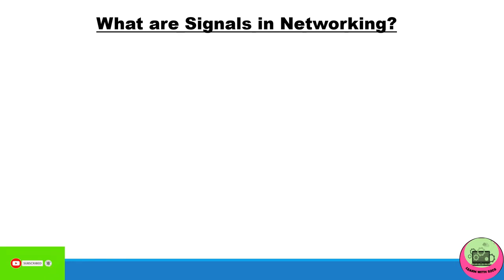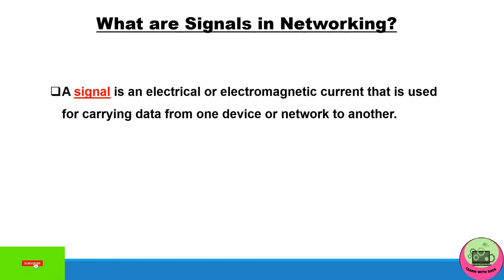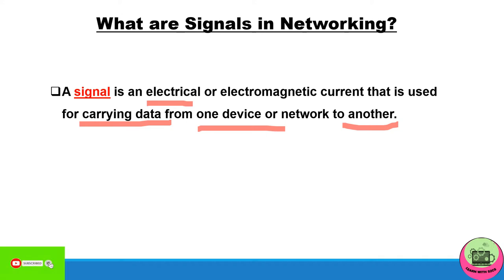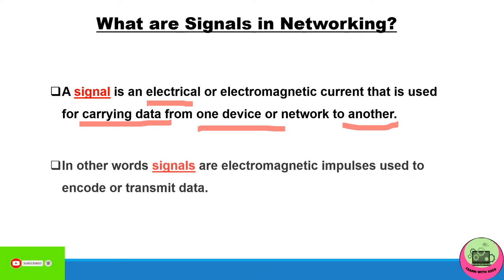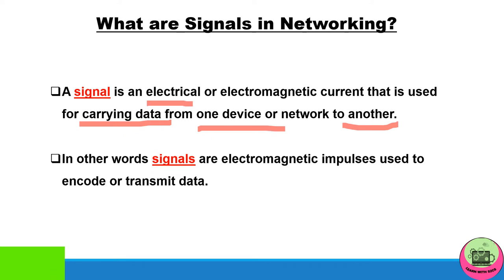Before beginning with analog and digital signals, you must understand what signals are. A signal is an electrical or electromagnetic current that is used for carrying data from one device to another. In other words, signals are electromagnetic impulses used to encode or transmit data.